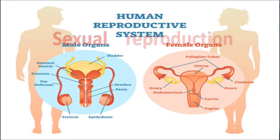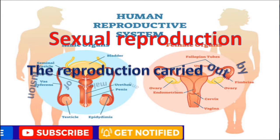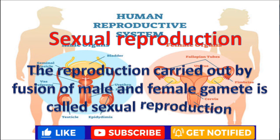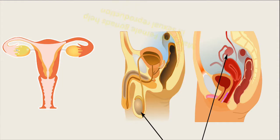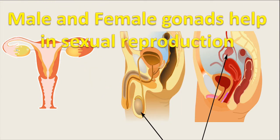Sexual reproduction is the reproduction carried out by fusion of male and female gametes. Male and female gonads help in sexual reproduction by production of gametes.